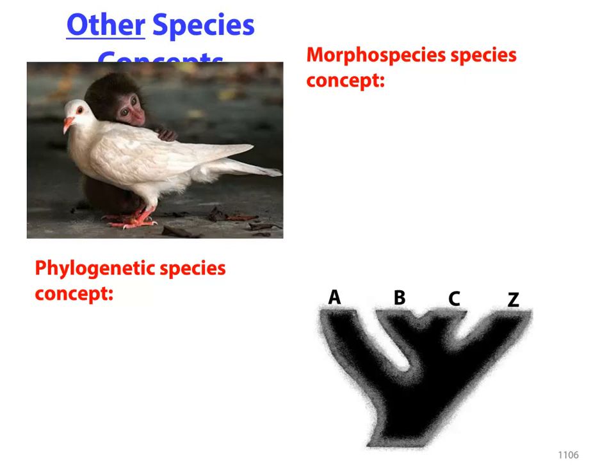There are other species concepts. One is known as the morphospecies concept. I'd like you to stop lecture and, based on your readings, define the morphospecies concept. I also want you to stop and define the phylogenetic species concept. While you're doing this, it would be an excellent potential exam question to ask you the advantages and disadvantages and to compare and contrast each of these and come up with some examples. Hint, hint — wouldn't that be a great exam question?